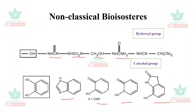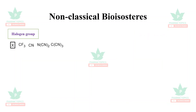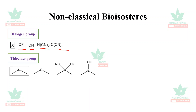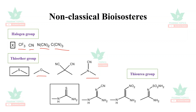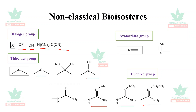For halogen groups, fluorine, chlorine, bromine, and iodine can be interchanged. Specifically, –CF₃ can be replaced with –CN, –N(CN)₂, or –C(CN)₃. Thioether groups can be replaced with plain ether or –NCN–. Thiourea groups also have several bioisosteric substitutions available to retain their properties.